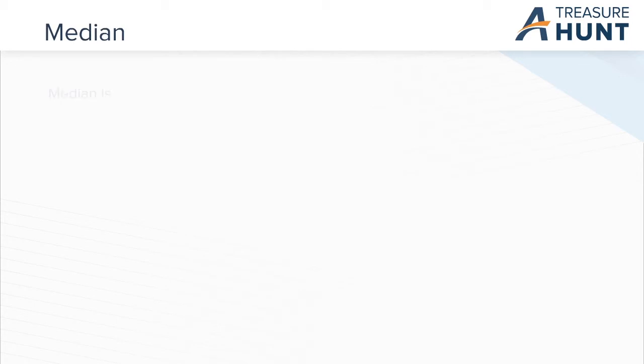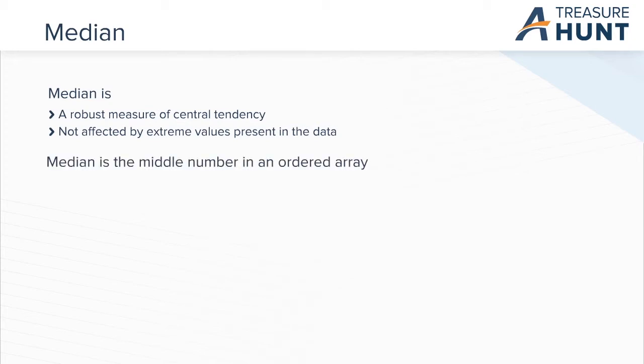Now let's talk about median. This robust measure of central tendency is not affected by extreme values. In an ordered array of data points, large to small, the median is the middle number. If the count of numbers in a data set is odd, the median is simply the middle number.